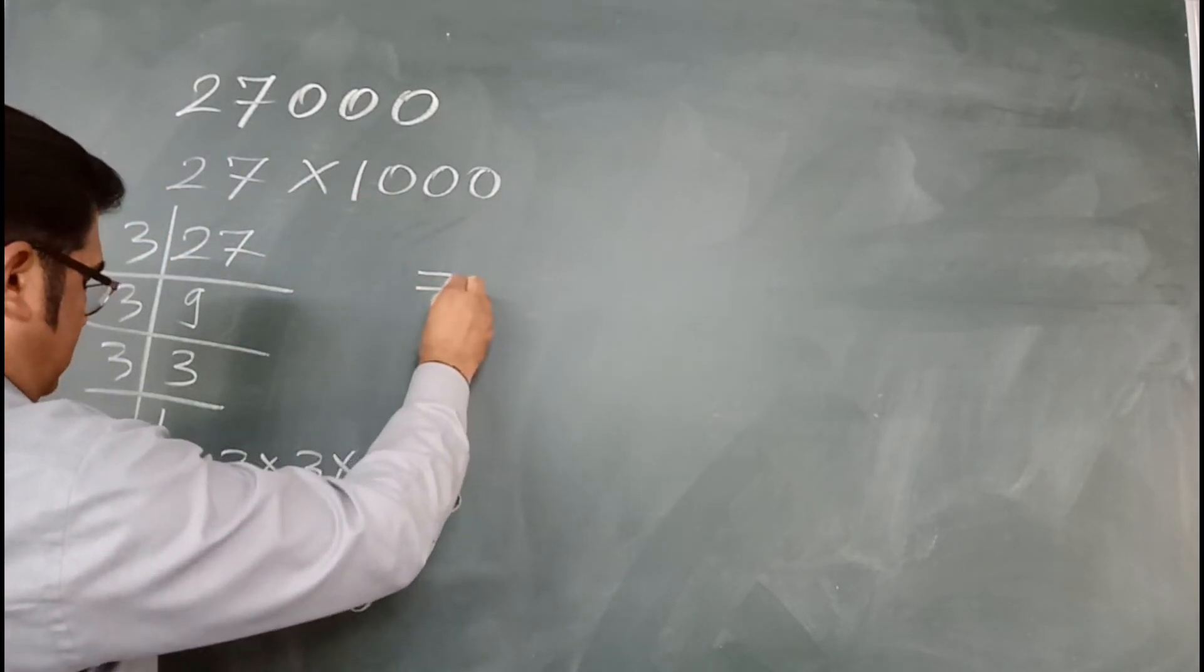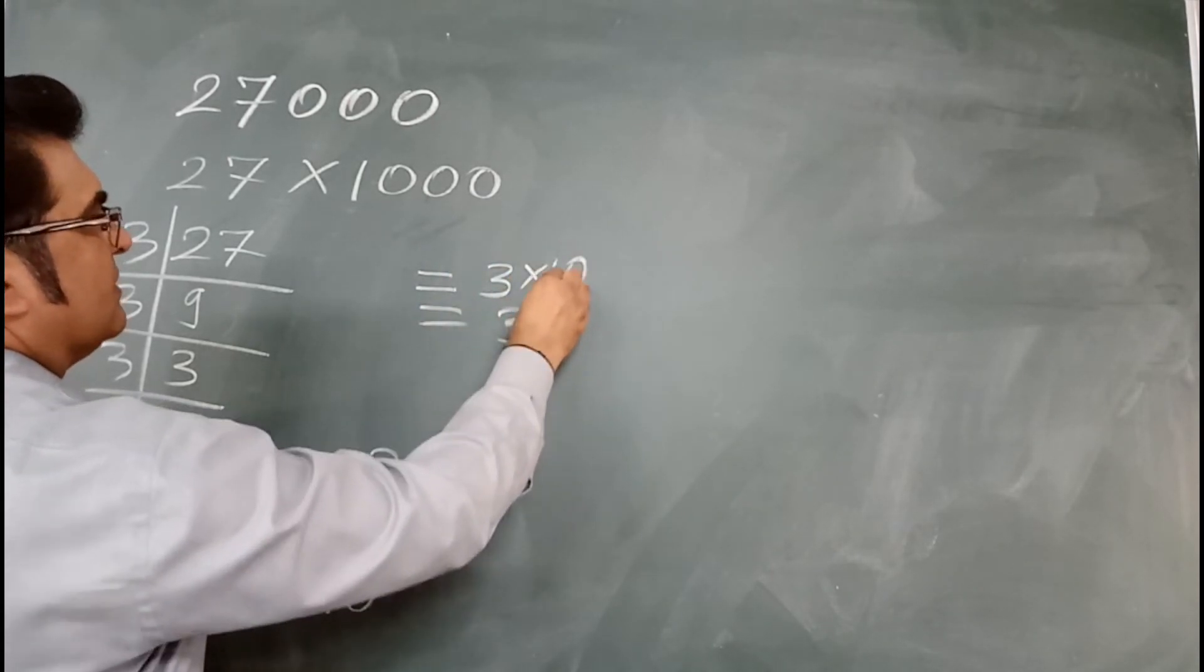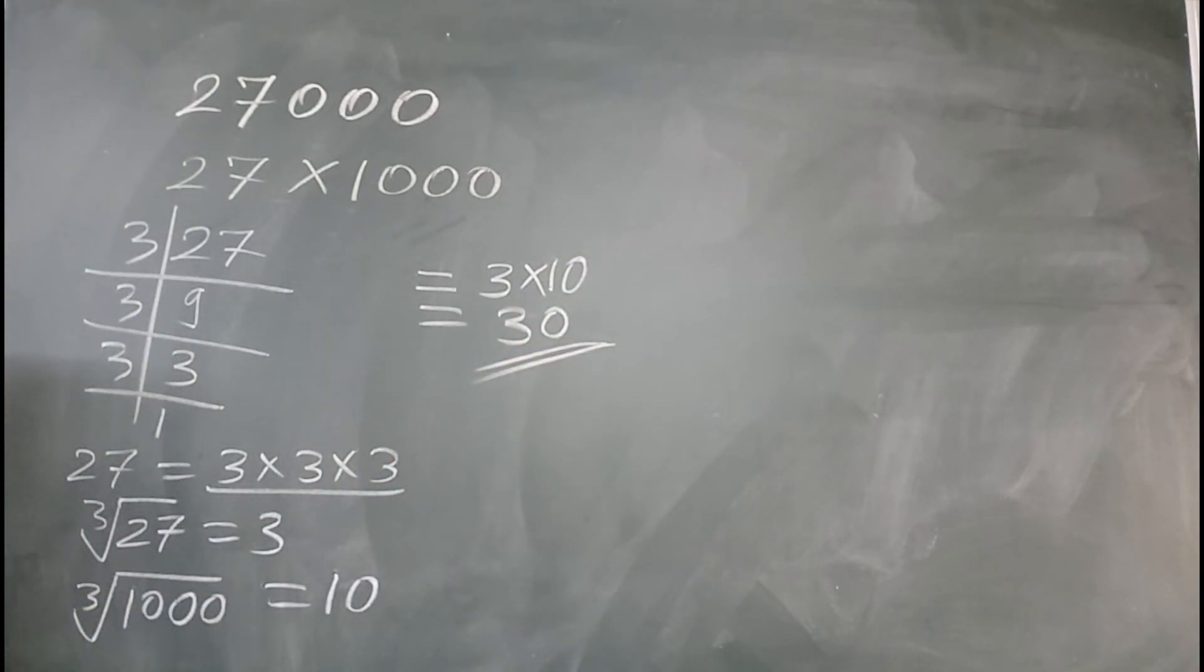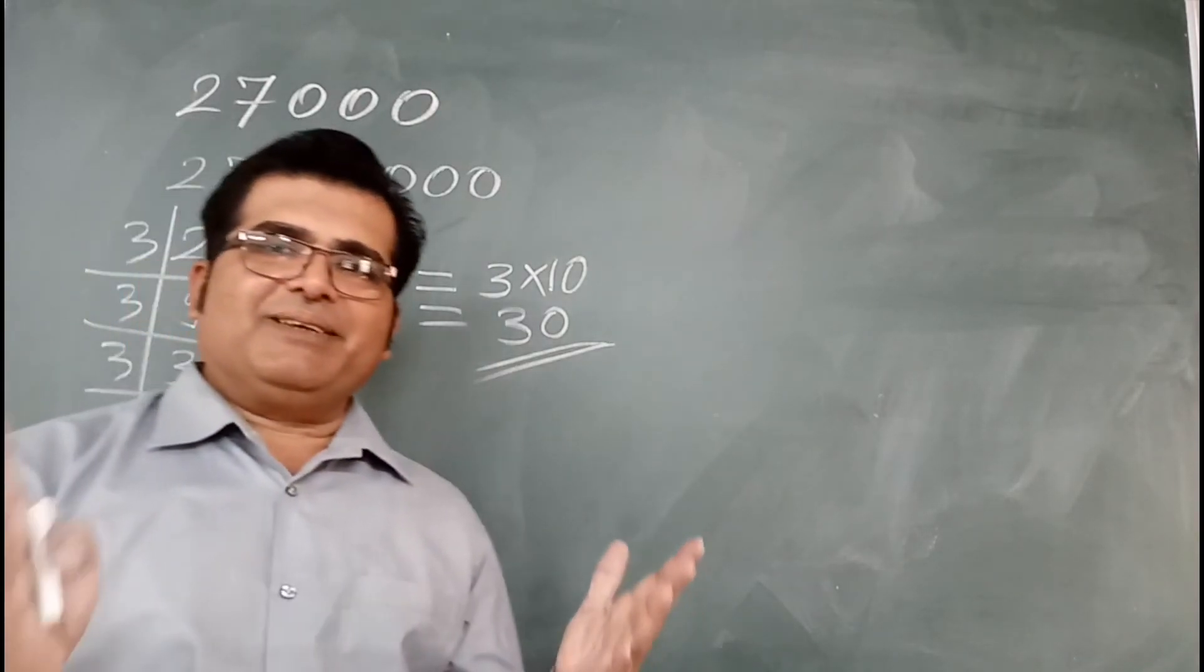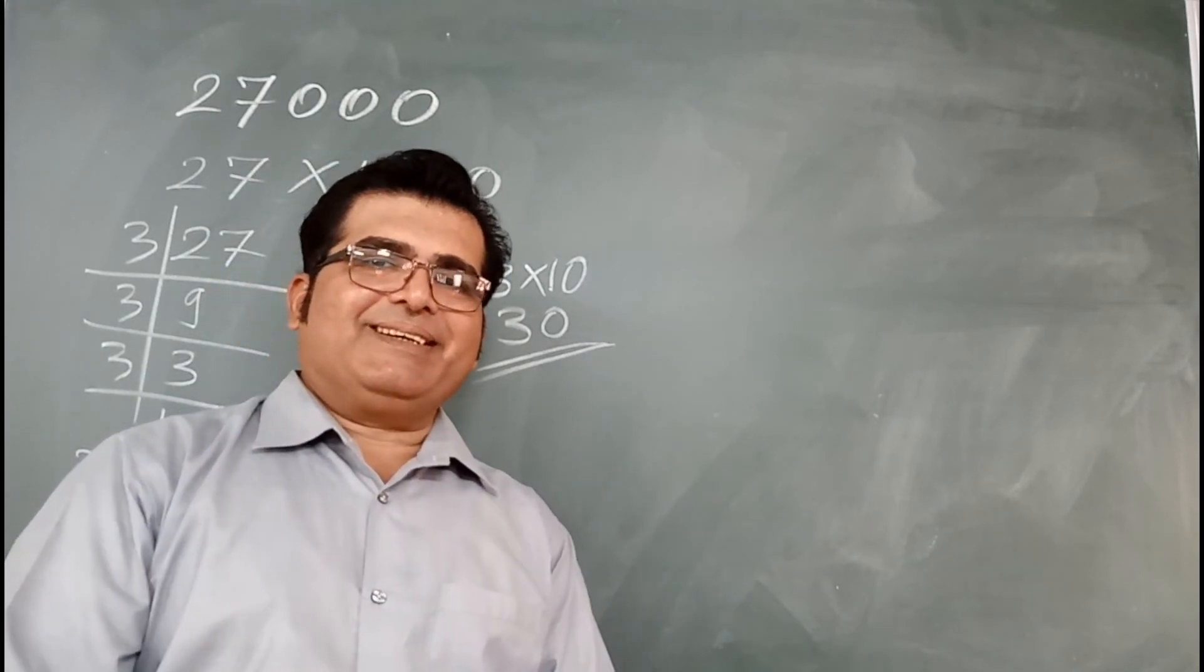So 30 is the answer. This way also can be done for finding the cube root of a number. You first break the number, then find the cube root of both numbers, then get the answer. Thank you, have a great day.